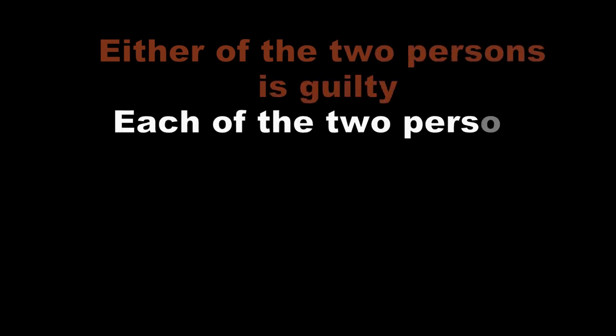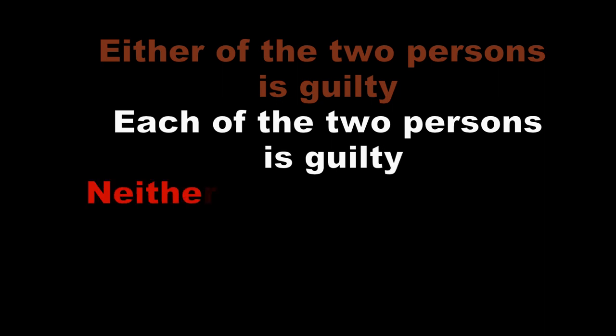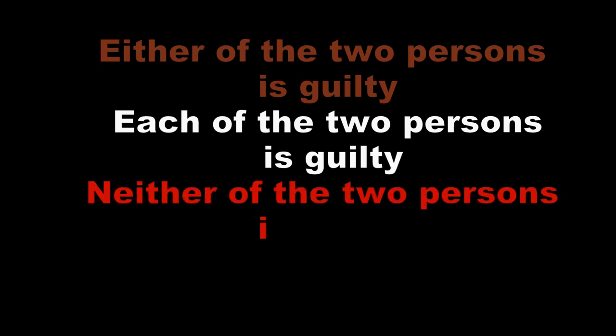Example: 'Either of the two persons is guilty.' That is correct. 'Neither of the two persons is guilty.' Note the singular verb in both cases.